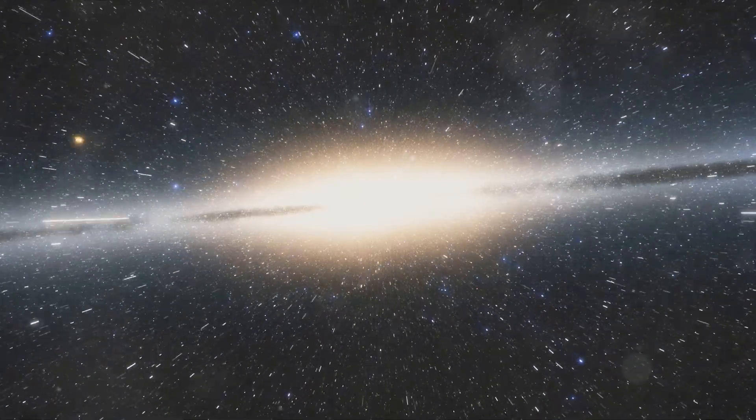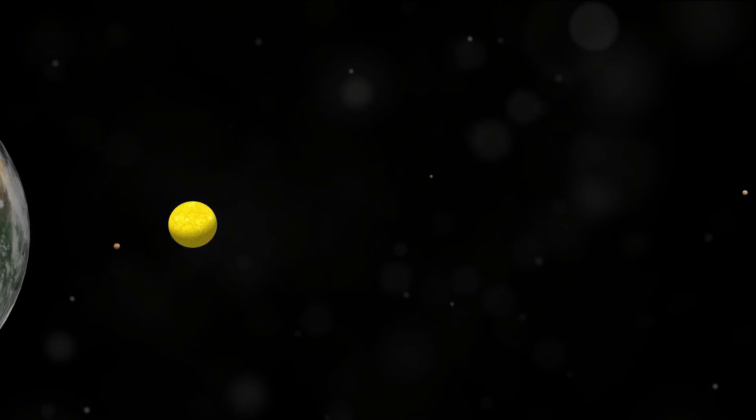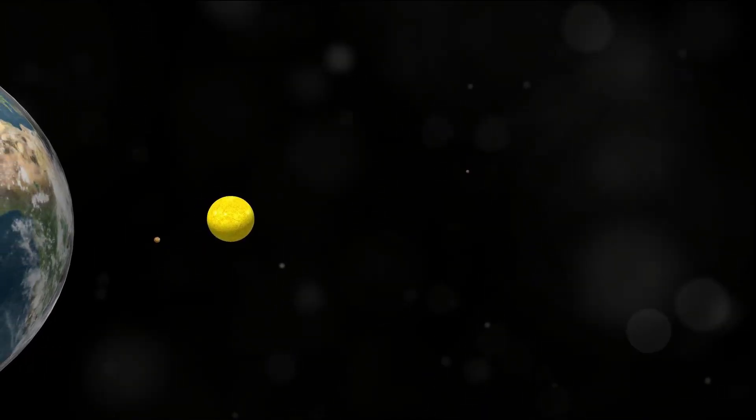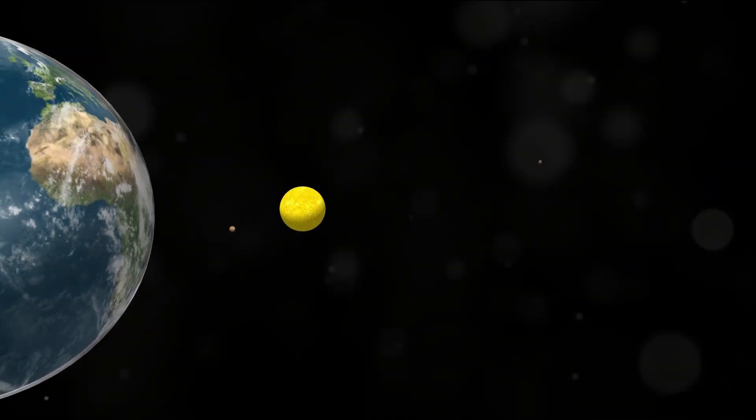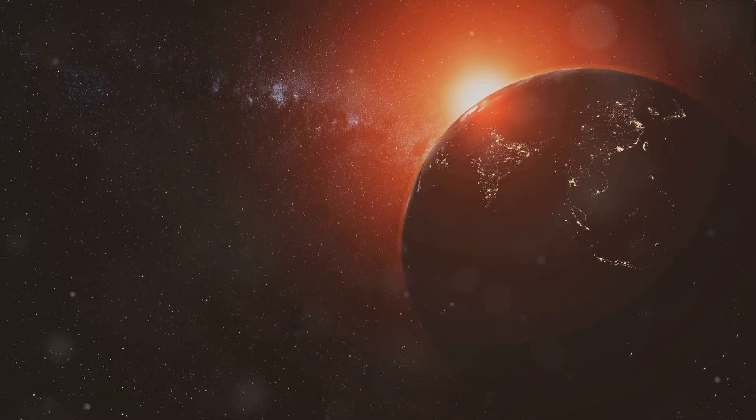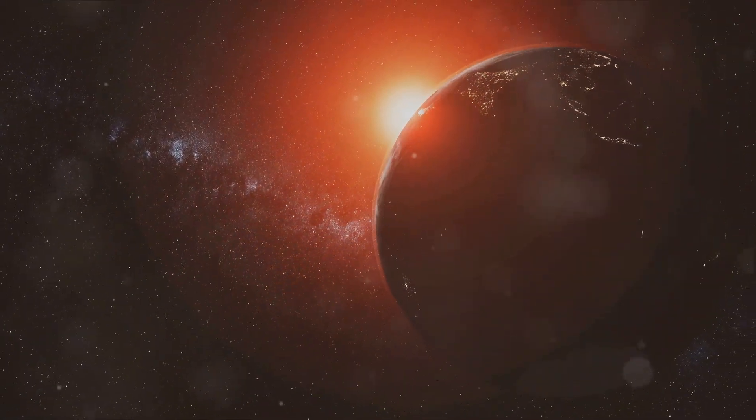That is, the scale is truly mind-boggling, isn't it? Now where do we fit into this cosmic landscape? Our solar system, with Earth as our home, is nestled within the Orion Arm of the Milky Way. We're situated about 26,000 light years from the galactic center. To put that into perspective, if the Milky Way were a city, we'd be living in the suburbs, a fair distance away from the bustling downtown.